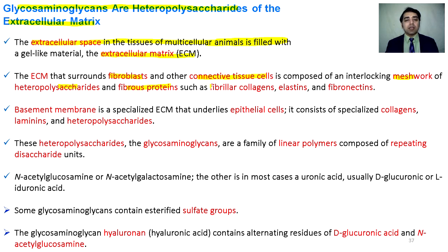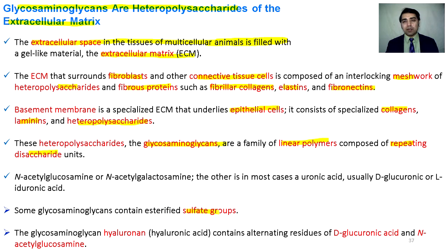Fibrous proteins consist of fibrillar collagens, elastins, and fibronectins. The ECM lining underneath epithelial cells has specialized collagen, laminins, and heteropolysaccharides. These heteropolysaccharides, the glycosaminoglycans, are a family of linear polymers composed of repeating disaccharide units. Some glycosaminoglycans contain esterified sulfate groups.